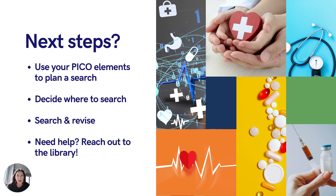Then search and revise. Do a couple of searches and see what you find. Are you finding relevant results? Are they meeting your needs? Do you feel like the search is too specific? Do you need to broaden it a little bit? It's an iterative process, so you'll go through a few different searches before you find what you're looking for. Make sure you check out some of our search tips, because they'll help get you there faster. And if you need help, don't hesitate to reach out to the library — we are very happy to help.